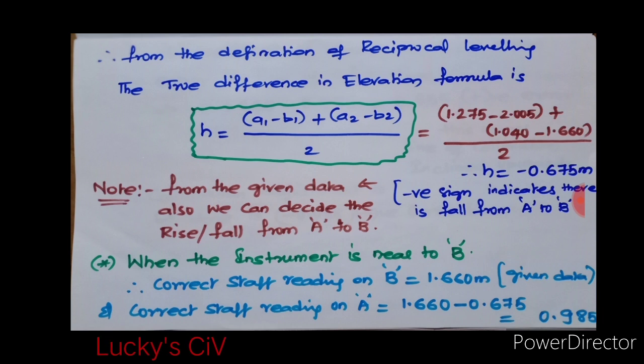What is A1 and B1? When the instrument was set up at A, the staff readings on A and B. And A2 and B2 are the staff readings taken when the instrument was at B. Based upon the given data, I have obtained the true difference in elevation as minus 0.675 meters.